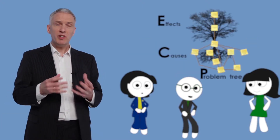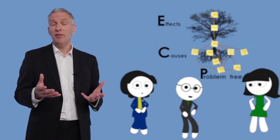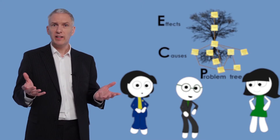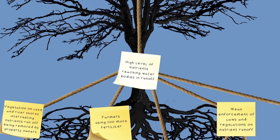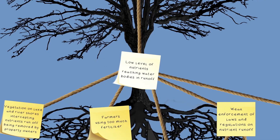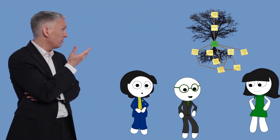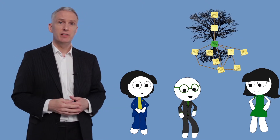You need to imagine what kind of situation you would like to achieve in the future. What does it look like? Let's take our key problem: high level of nutrients reaching water bodies in runoff. Should we just make it low level of nutrients reaching water bodies in runoff? Yes, sometimes it is as easy as that.